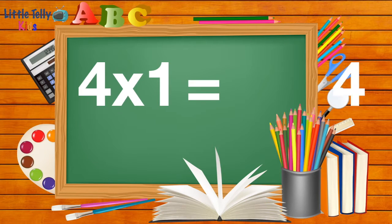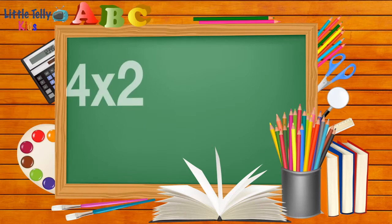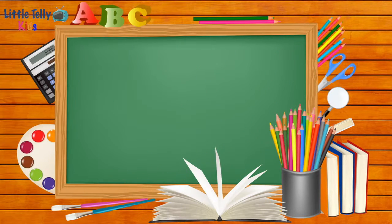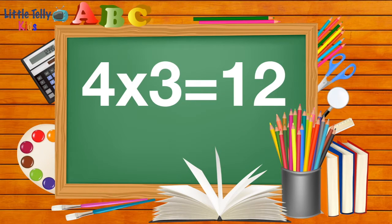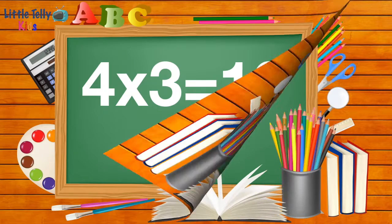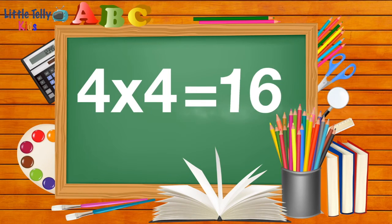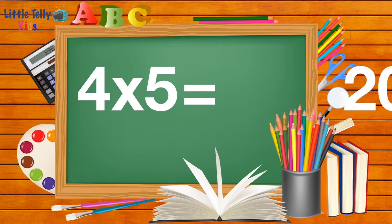Four ones are four. Four twos are eight. Four threes are twelve. Four fours are sixteen. Four fives are twenty.